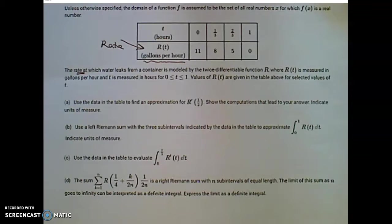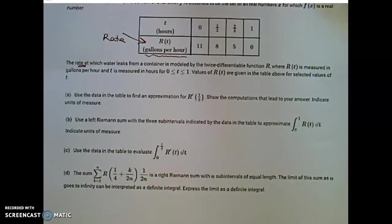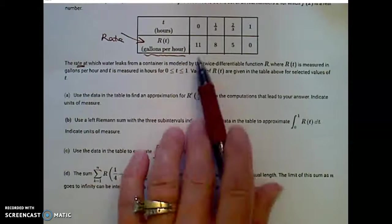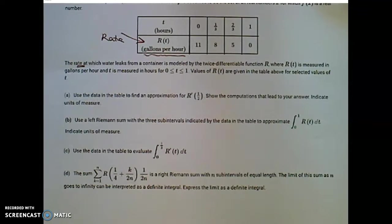Values of R of t are given in the table above for select values of time t. We're given actual data values, so we have to use those values in the table. We're not given a function for R. We have to use those table values.